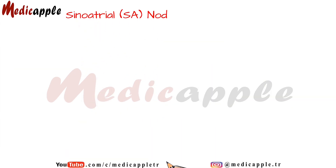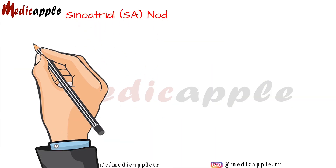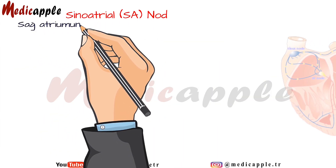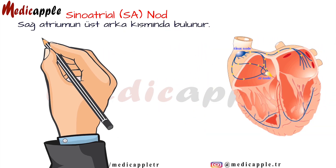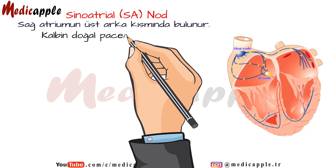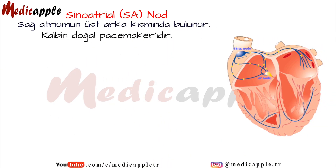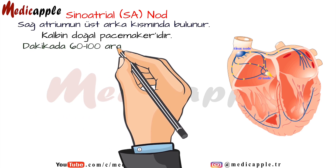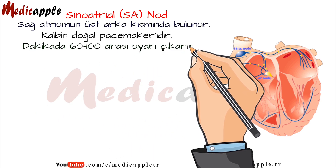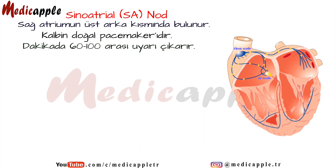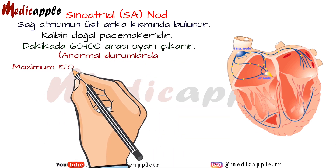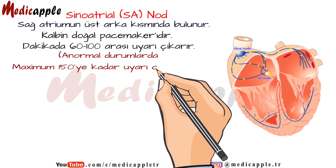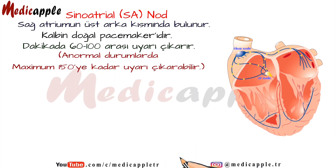Sinoatrial SA node. It is located in the upper posterior part of the right atrium. It is the natural pacemaker of the heart. It generates between 60 and 100 alerts per minute and can generate up to a maximum of 150 alerts in abnormal situations.